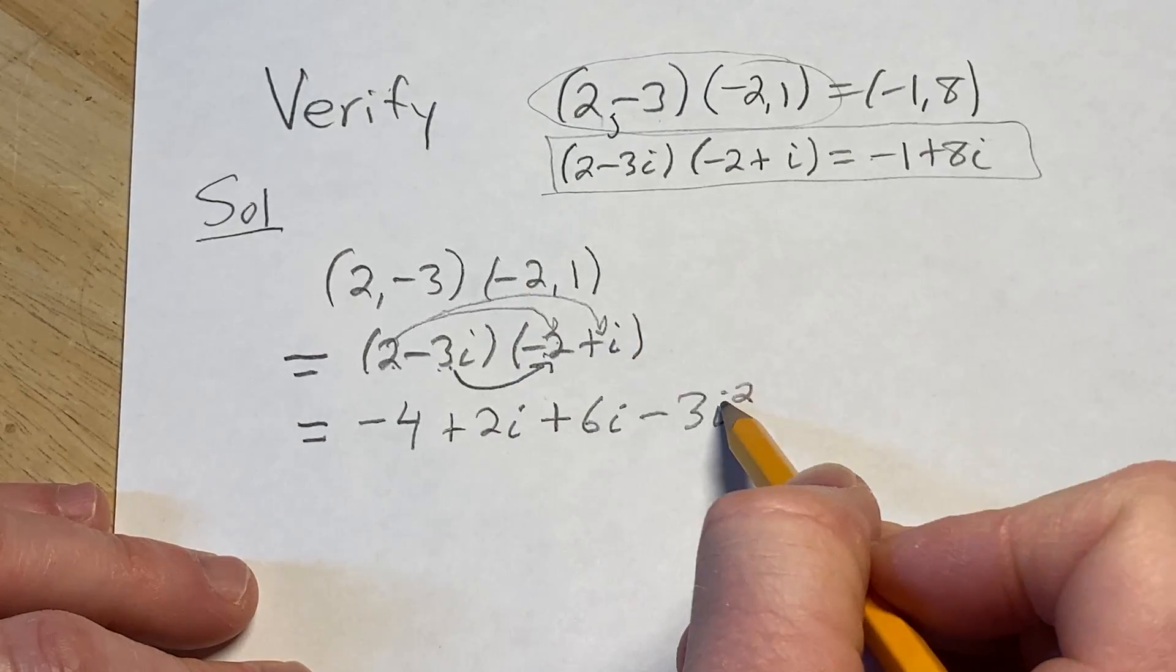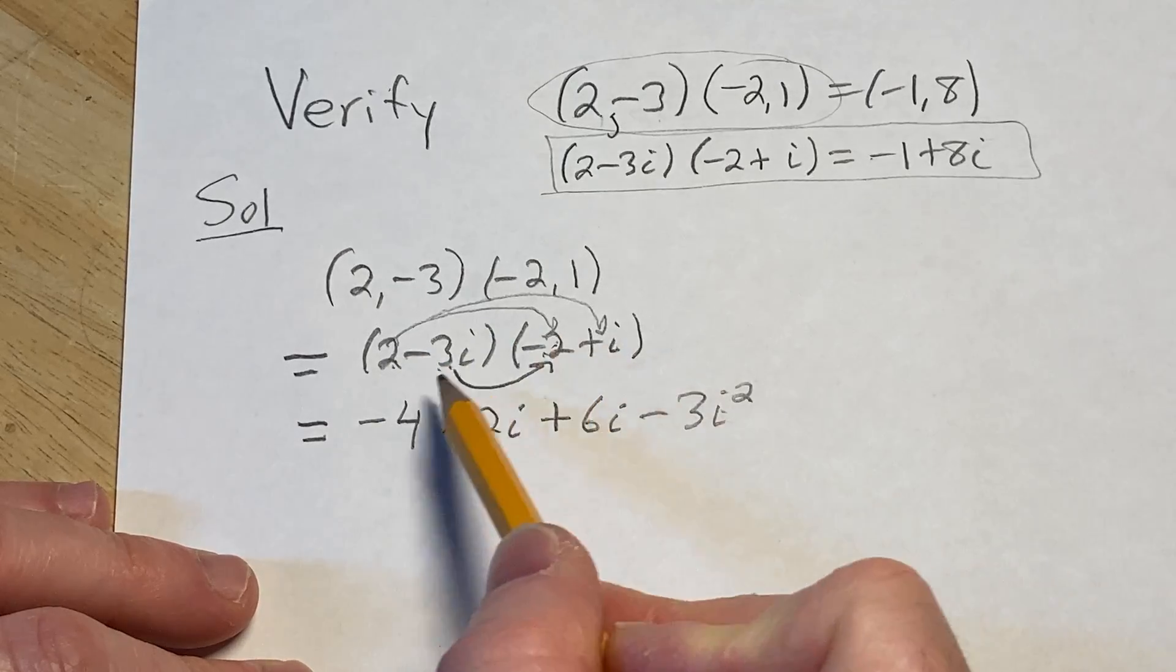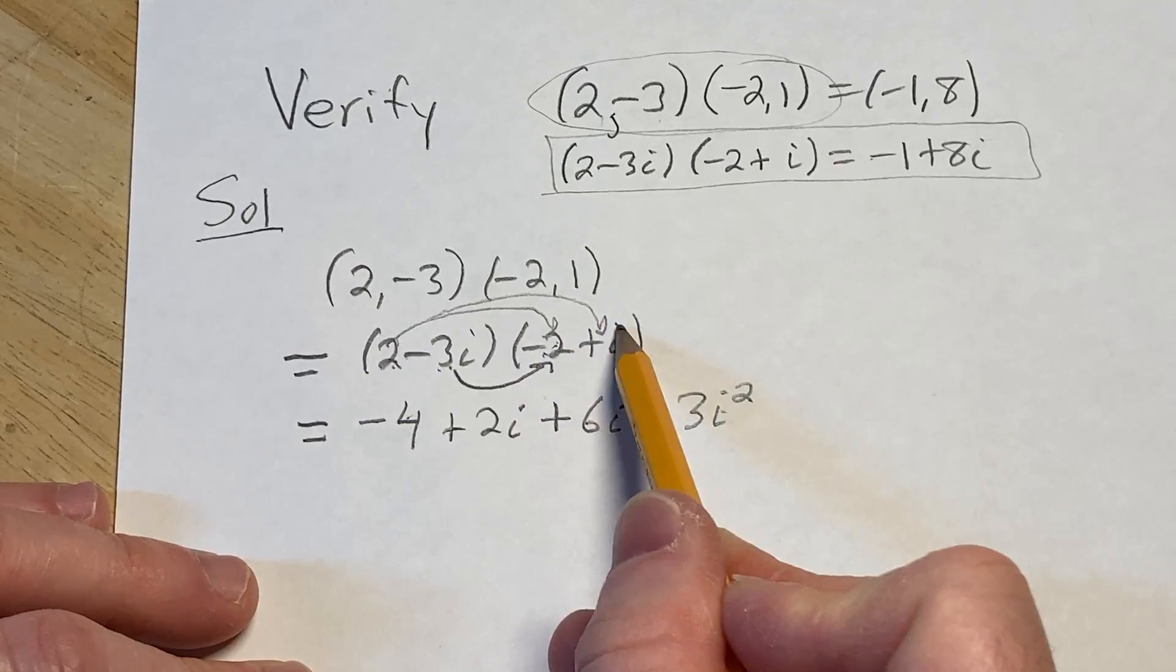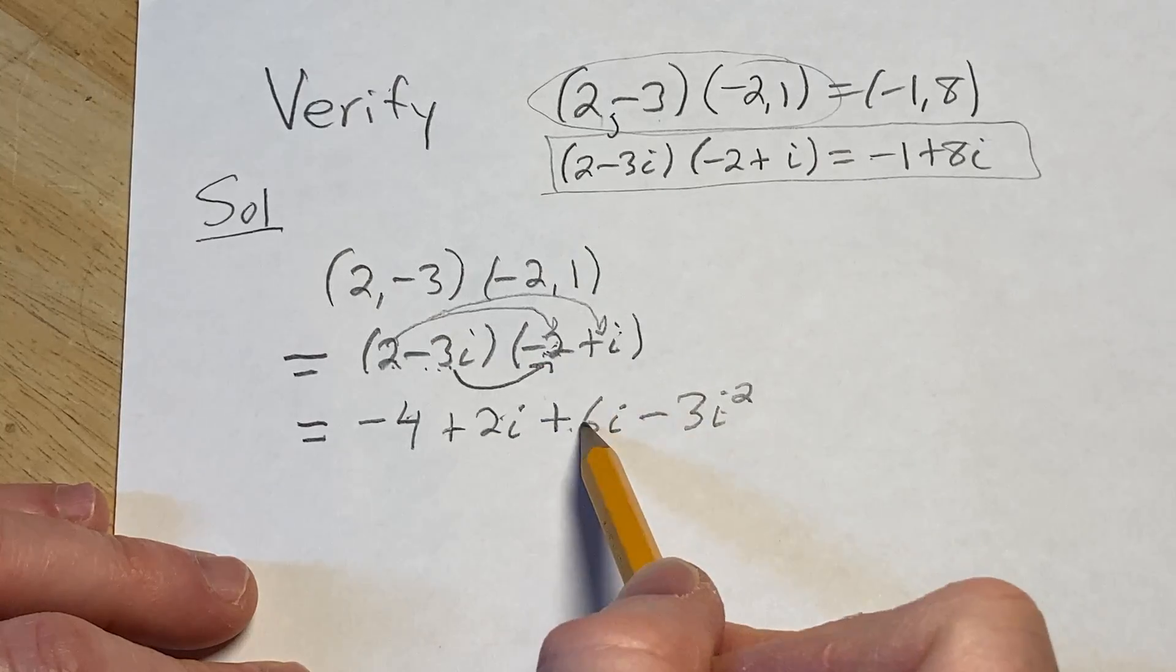Let's check all that. 2 times negative 2 is negative 4, 2 times i is 2i. Negative and negative is positive, 3 times 2 is 6, and we still have the i.